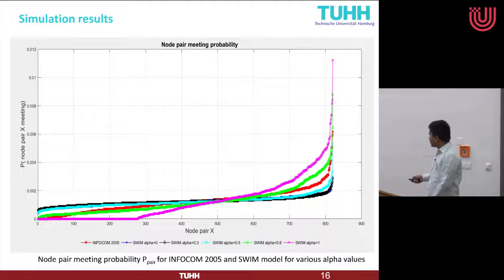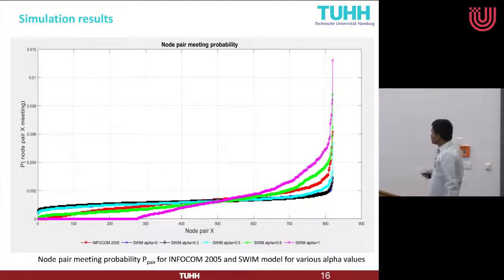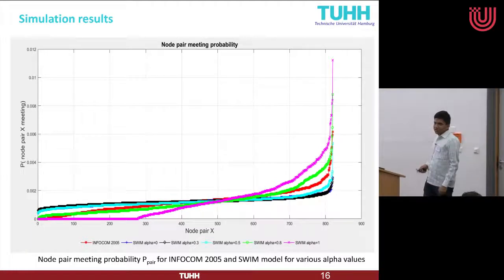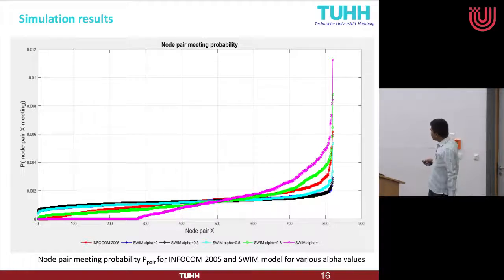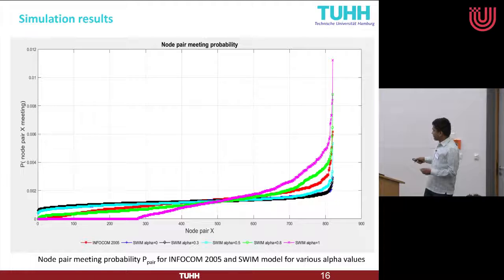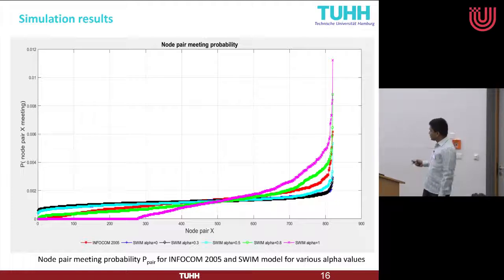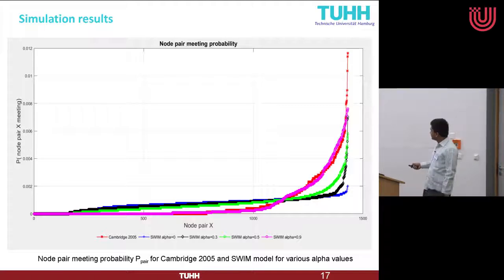For alpha equal to 0, meaning nodes visit only popular locations, the curve is very flat — the blue line hidden behind the black line. For alpha equal to 1, where nodes only visit locations within their neighborhood radius, there is a clear rise in the curve. Because the sum of probabilities is 1, a rise in one part creates a fall elsewhere. As alpha increases, there is a clear increase in non-linearity across all curves. We observe the same pattern for Cambridge 2005, where alpha equal to 0 gives a flat curve and higher alpha values produce non-linearity toward the end.